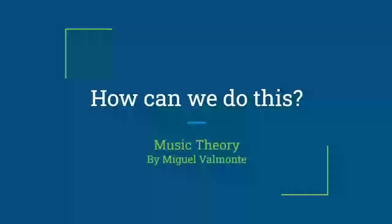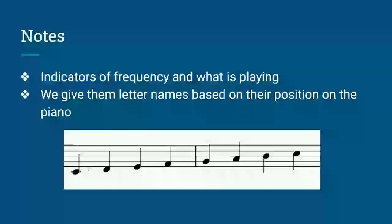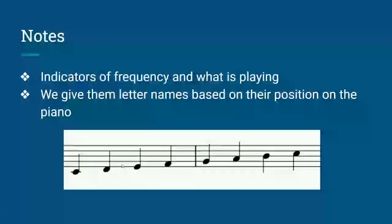So how can we actually do this? Sounds are just vibrations in the air traveling at different speeds. Faster vibrations have a higher pitch, while slower ones have a lower pitch. We limit ourselves to specific frequencies in certain intervals. We use notes to identify what we are playing. Calling the notes by their frequency would be really tedious, so we give them single letter names based on their position on the piano.